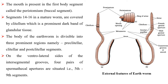Segments 14 to 16 in the mature worm are covered by clitellum, which is a prominent dark band of glandular tissue. The body of the earthworm is divisible into three prominent regions: pre-clitellar, clitellar and post-clitellar segments. On the ventrolateral sides of the intersegmental grooves, four pairs of spermathecal apertures are situated, i.e., 5th to 9th segments.